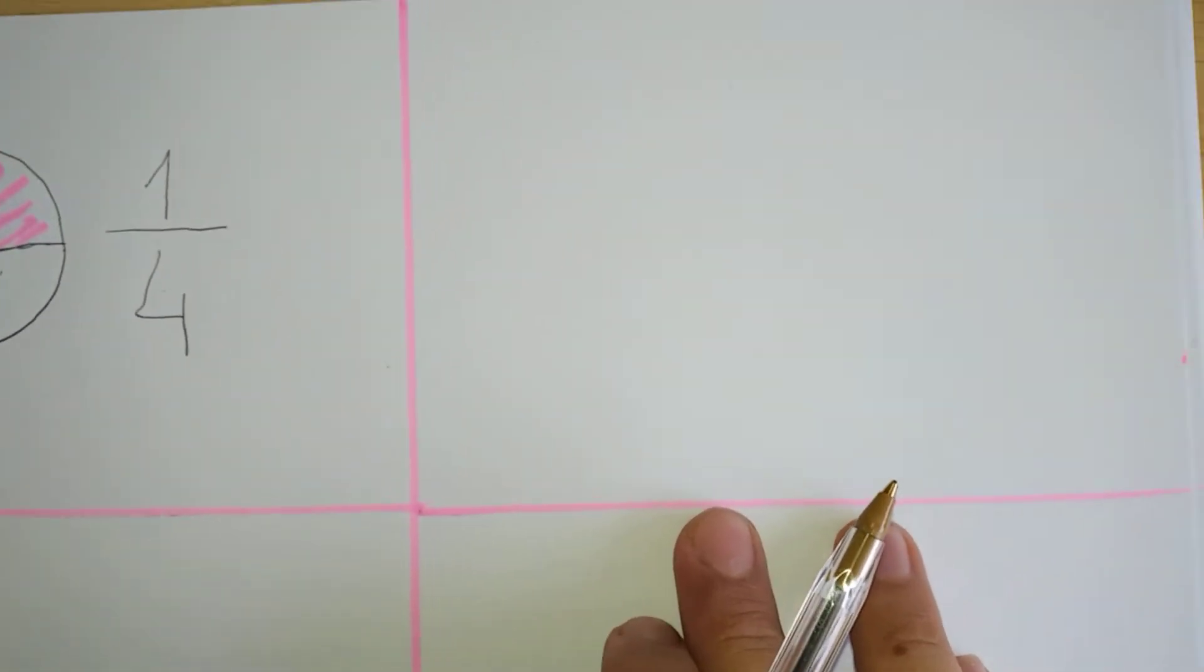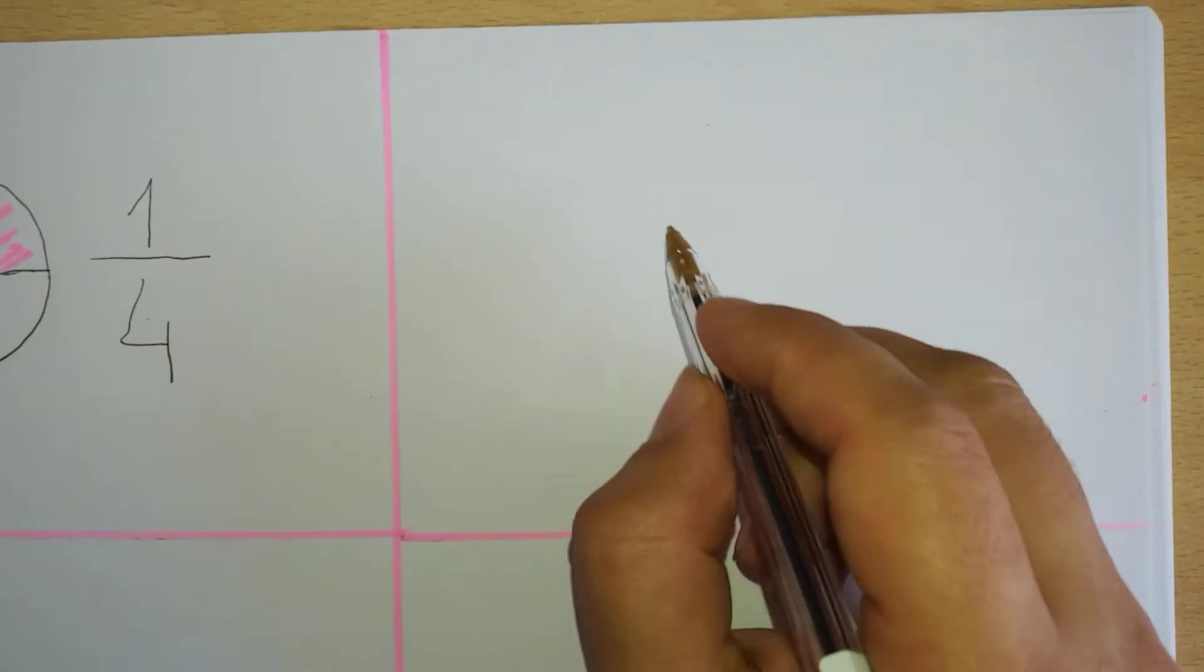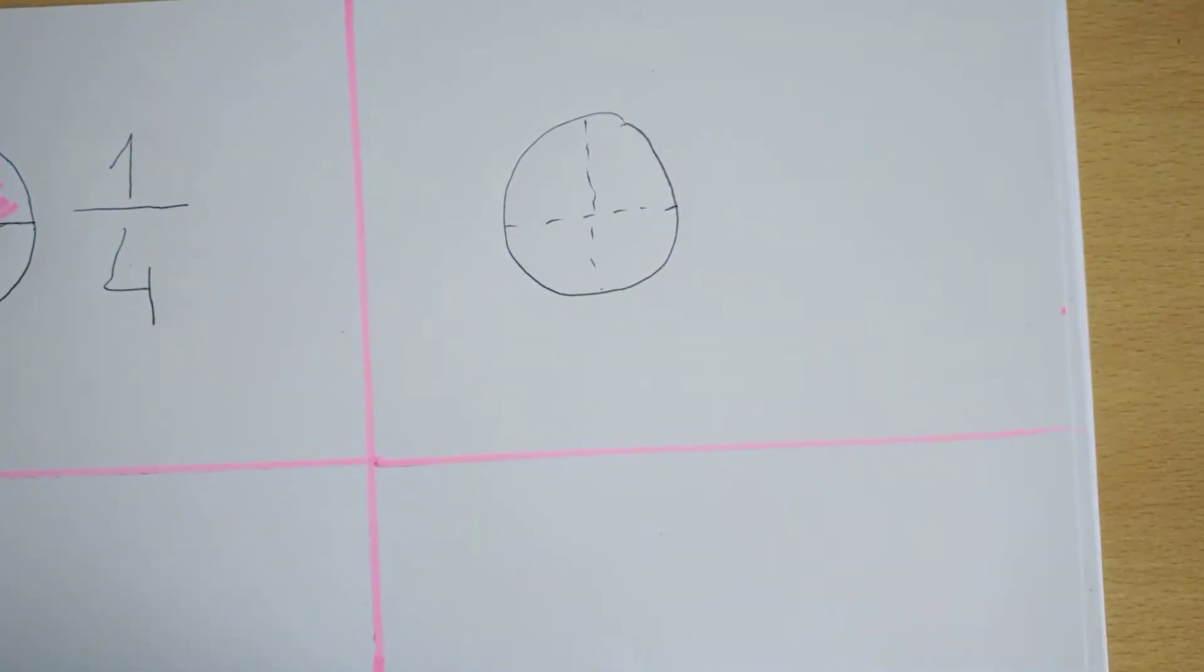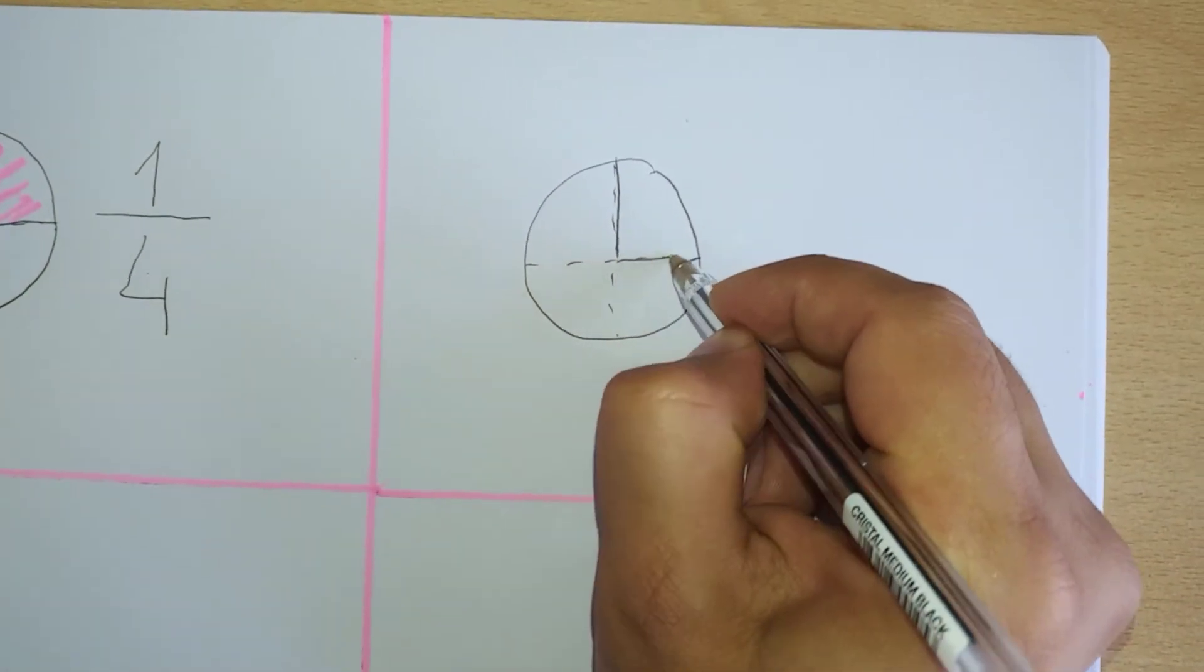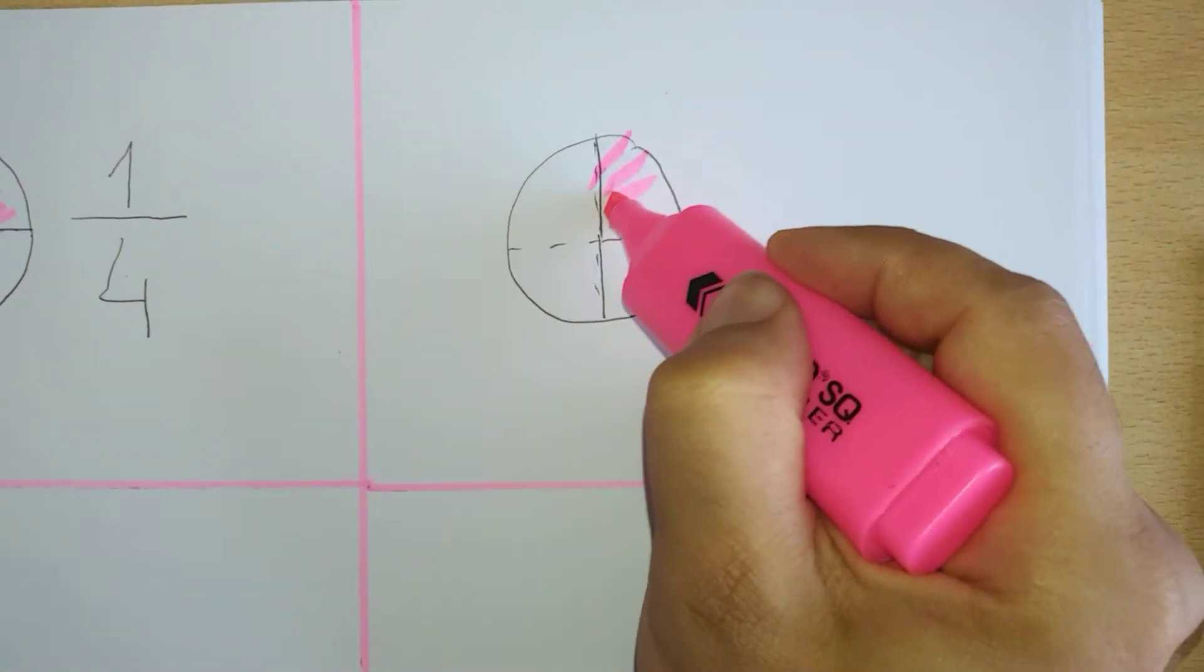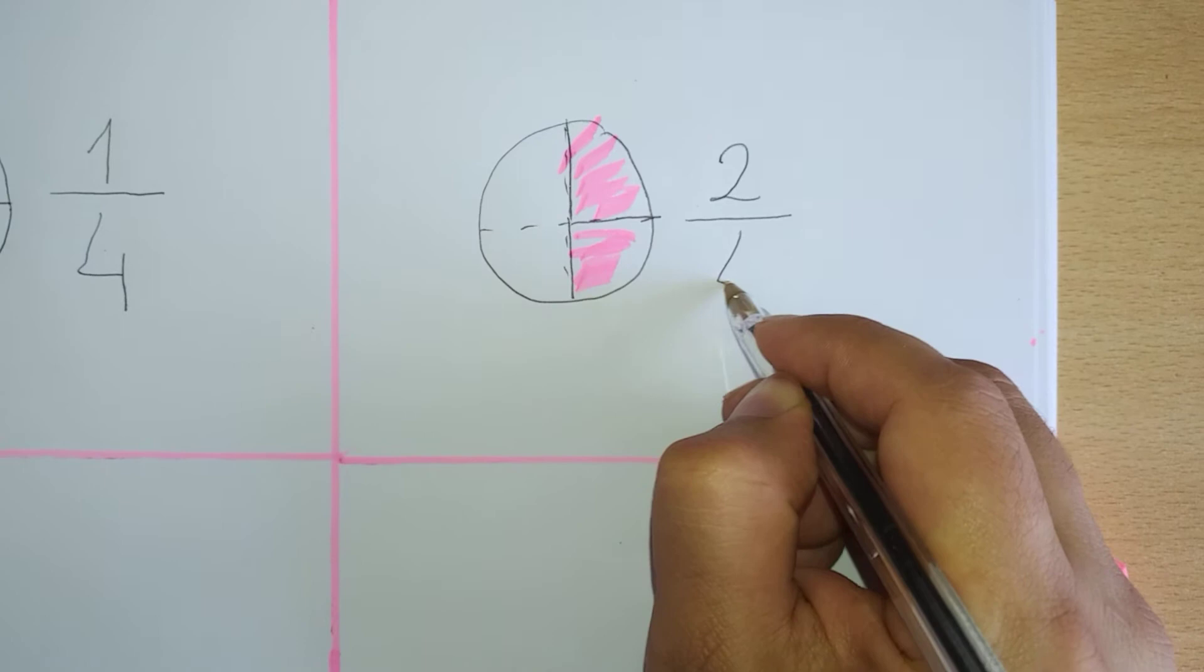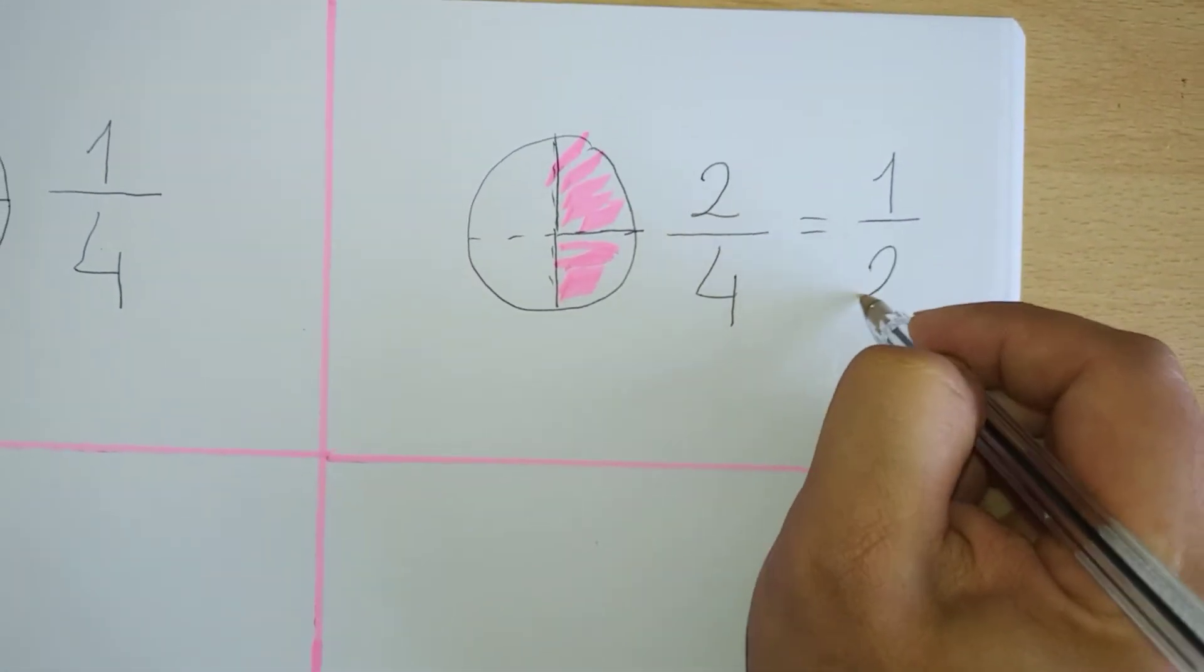And secondly, if one person were to take two quarters of the pizza. What we need to do, we need to redraw our pizza. And then four equal pieces. And then you will have to eat two quarters of the pizza, which is one and then second part. So one quarter, second quarter, which is exactly two out of four or one half.